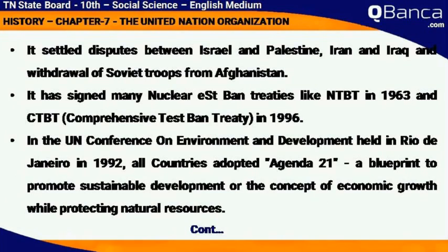The UNO also facilitated the withdrawal of Soviet troops from Afghanistan. It has signed many nuclear test ban treaties, like the NTBT in 1963 and the CTBT (Comprehensive Test Ban Treaty) in 1996.